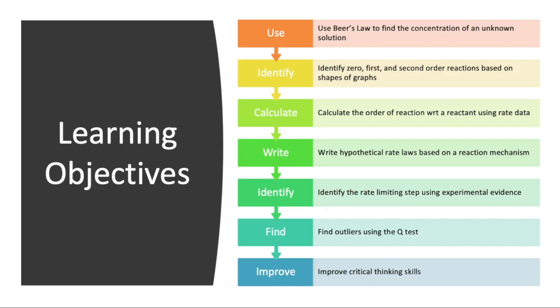Our experiment today is about kinetics. We're going to be using the spectrometers again, and we're going to be using a variety of ways to find the order of a reaction with respect to a particular reactant. We're going to use graphical analysis and also rate data, because we want to know what the rate-limiting step is for this reaction.